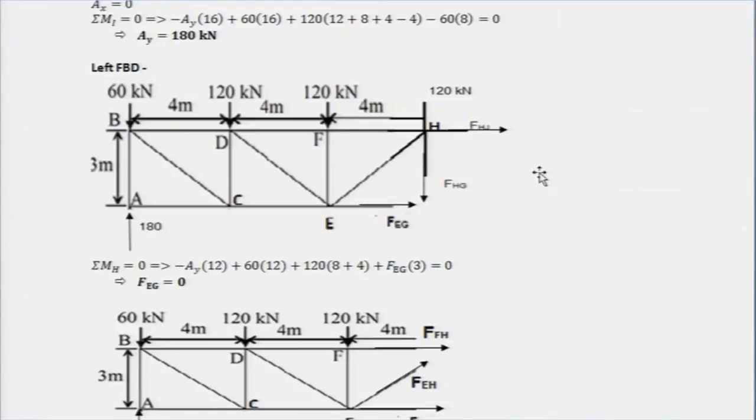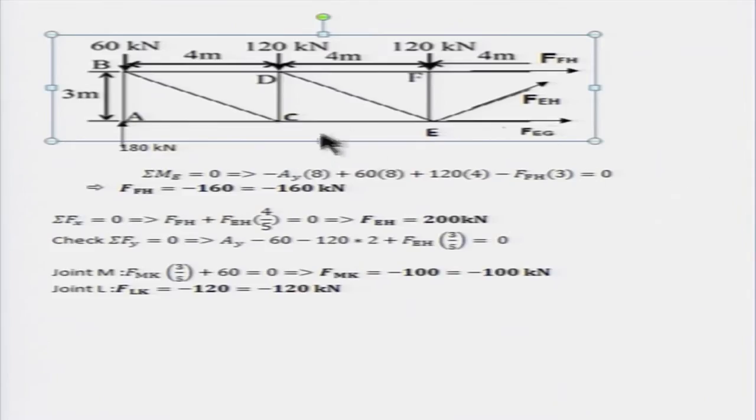So let us just look at the solution, it is being displayed already. Just look at it, how the method of sections are being used. FH, EH, and EG can be solved by passing this section as you can see here.